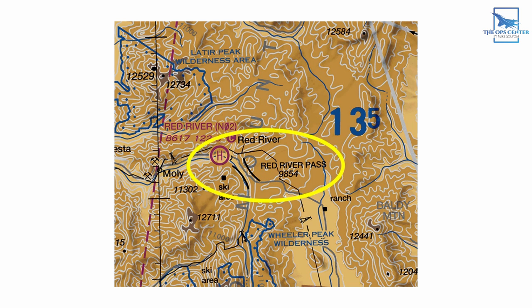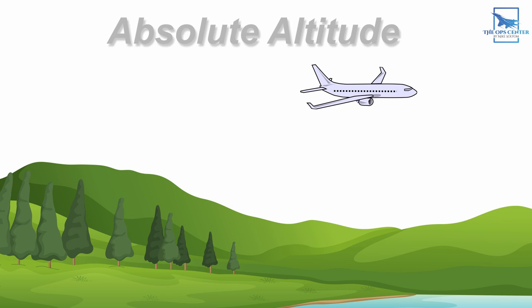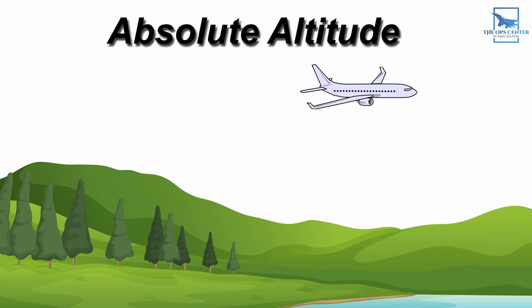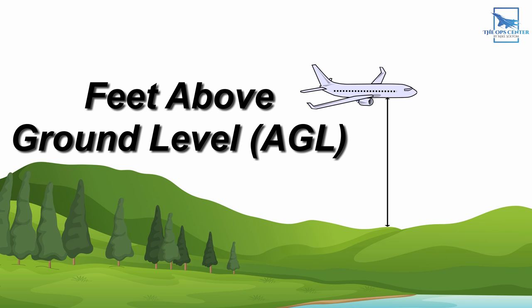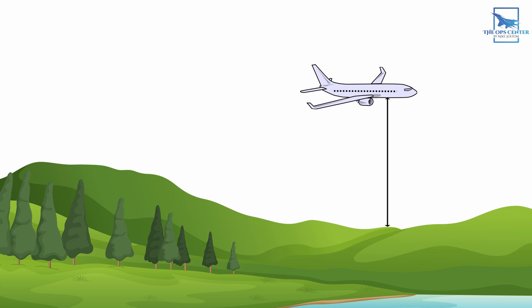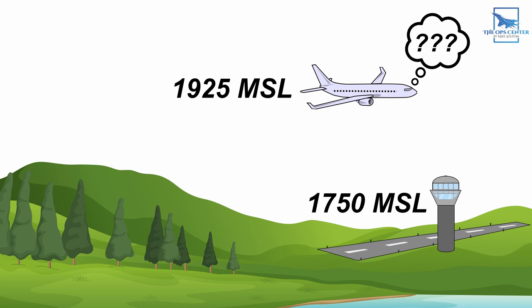True altitude is useful for planning purposes, but there are often situations where a pilot might want to know how high they are above the ground instead of the sea. This is called absolute altitude and it's expressed as feet above ground level or AGL. Knowing where you are above sea level isn't all that useful if you're nowhere near the ocean and the terrain you're flying over is thousands of feet above the water. Imagine you're landing at an airport that is 1,750 feet above sea level and your altitude is 1,925 feet above sea level — you would need to do some extra mental math to figure out if you're at the right altitude above the airport. That's brain power that could be focused on other important tasks like landing the aircraft.